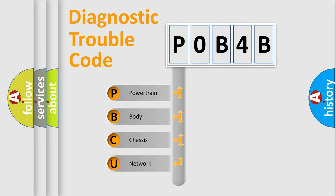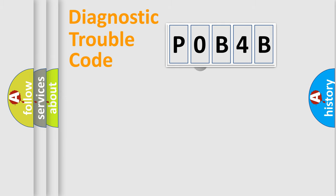We divide the electric system of automobile into four basic units: Powertrain, body, chassis, and network. This distribution is defined in the first character code.